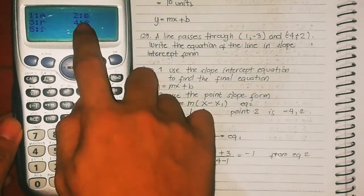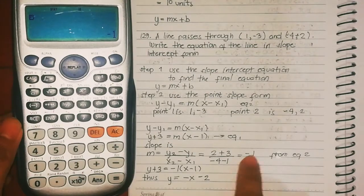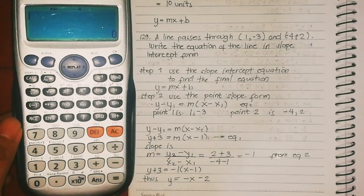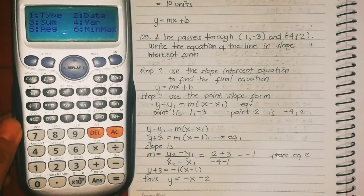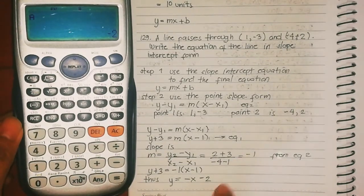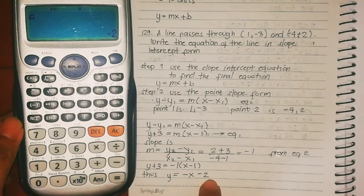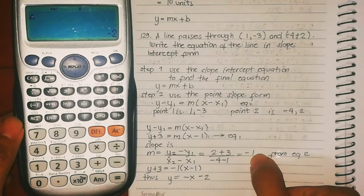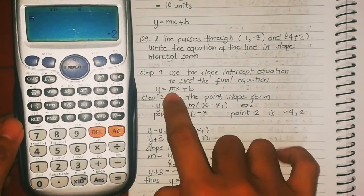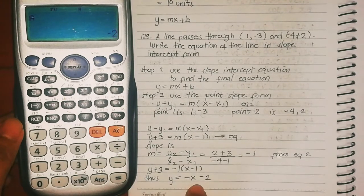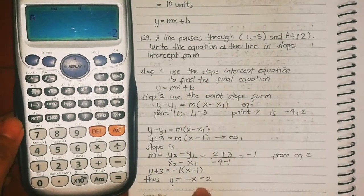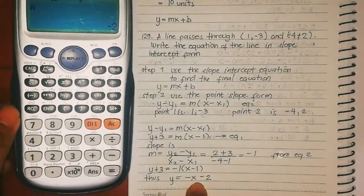Press AC, then Shift 1, then 5 then 2 to find the slope. b is the slope — result is negative 1. Then press AC, Shift 1, then 5 then 1 to find the y-intercept a — result is negative 2. So the slope is negative 1 and the y-intercept is negative 2. By substitution: y equals negative 1 times x plus negative 2. This is the final answer — the same as the manual method. This is the shortcut.